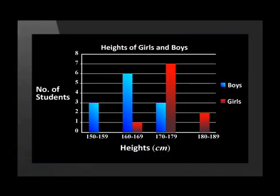Occasionally, we need to represent and compare more than one set of data on the graph. In these cases, we use multiple and compound bar graphs. A multiple bar graph is a bar graph that displays two or more sets of data at once for easy comparison. Bars that represent the same interval are grouped together with a space between the intervals. This multiple bar graph shows a comparison of boys' and girls' heights. The blue bars represent the boys' heights and the red represents the girls' heights.